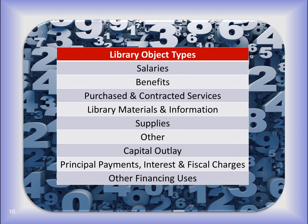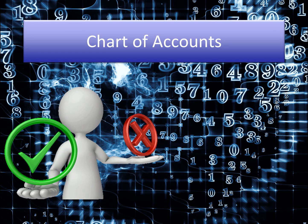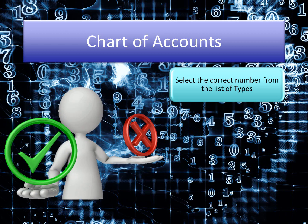Now on the screen we see the object types that belong to the Library Chart of Accounts. The descriptions are slightly different, but still easy enough to determine which category to select. Within each of these types are specific object codes. And once again the other categories should only be used when an item doesn't fit into one of the specific object types. Now we understand that the fund, revenue, and appropriation program and object numbers must be selected from the correct type.